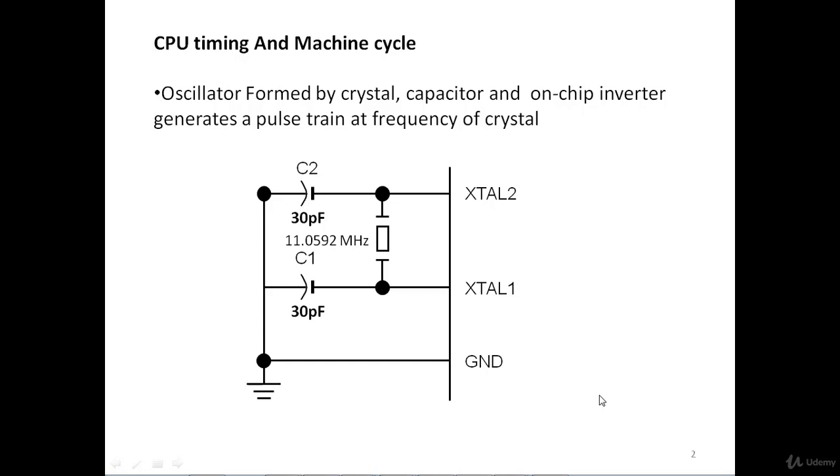CPU Timing and Machine Cycle. To generate operating frequency for 8051 microcontroller, we need to connect external crystal of frequency 11.0592 MHz in between XTAL1 and XTAL2 pin. Oscillator formed by crystal, capacitor and on-chip inverter generates a pulse train at a frequency of crystal. Hence, the crystal frequency would be the operating frequency in 8051 microcontroller.